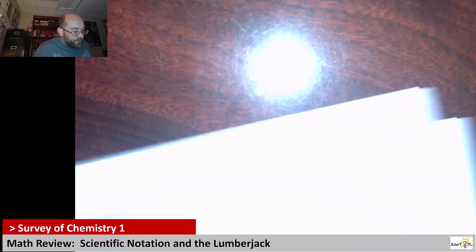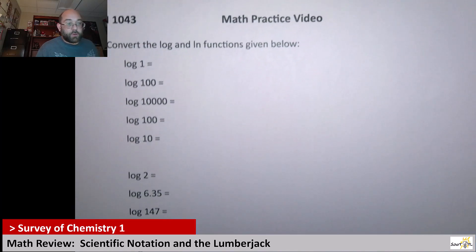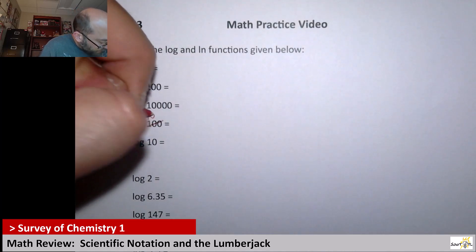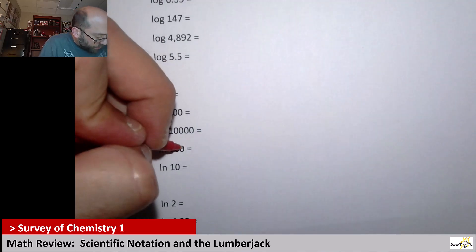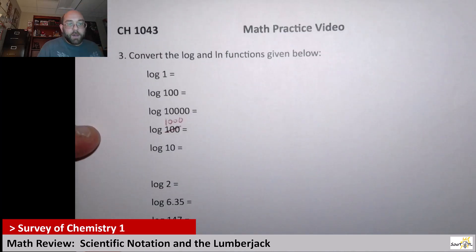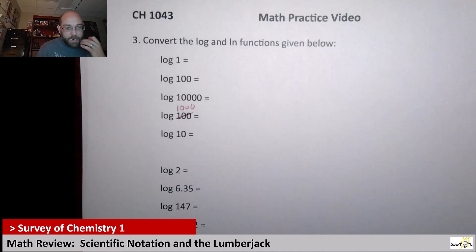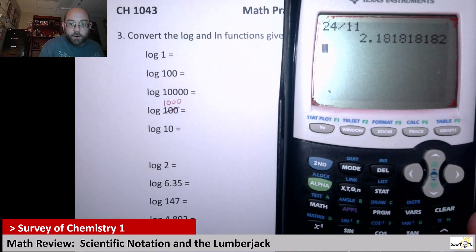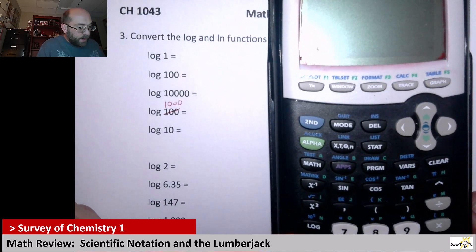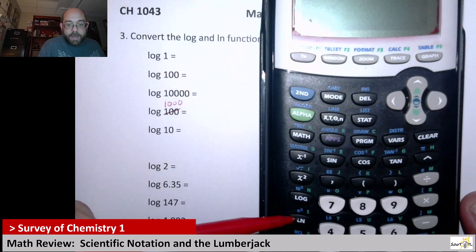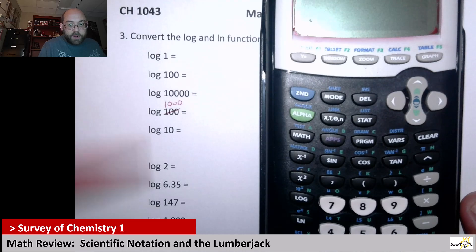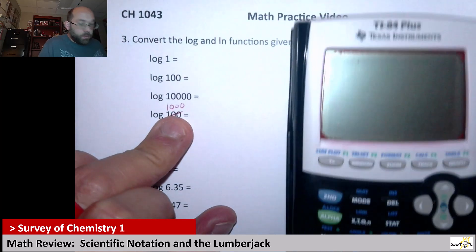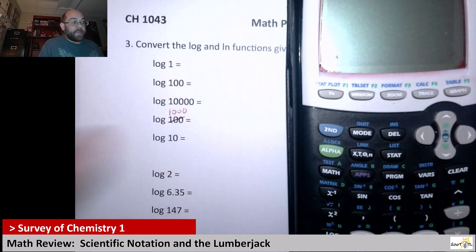Next up, our last page here is looking at using logs and natural logs. I need to make two adjustments real quick. That should be 1,000. And this one right here should also be 1,000. Now, when we look here, converting the log and natural log functions, it wants us to take the log of 1. I'm going to show you how to do that on the calculator real quick. So if you notice, on my calculator, I have a button that says log for log, and then I have an ln for natural log. So these first sets right here are all using log. Now, it wants me to take the log of 1. Let me zoom out some so you can kind of see.